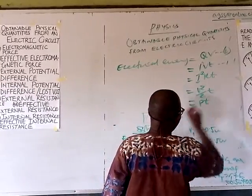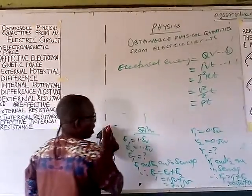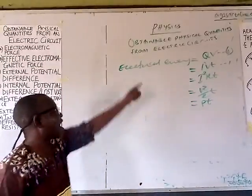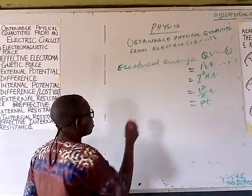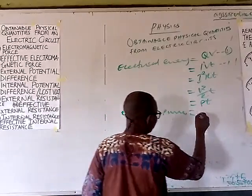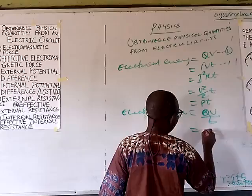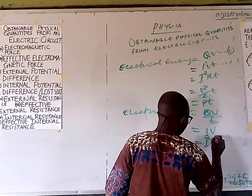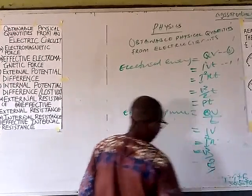Electrical power is defined as the time rate of energy spent in the circuit. It can be expressed as: P = QV/T, or equivalently P = IV, P = I²R, or P = V²/R. You can also write P = E/t in appropriate contexts.